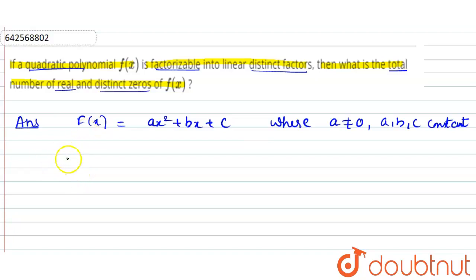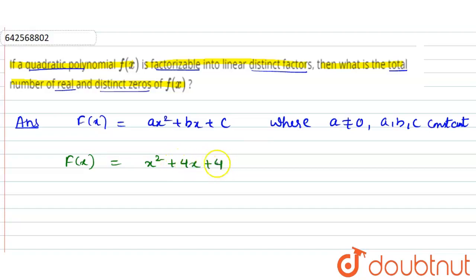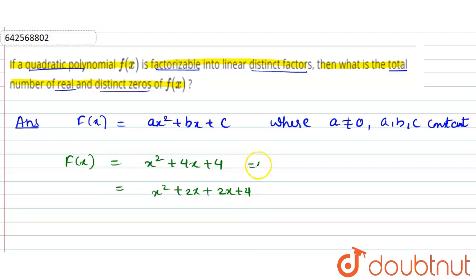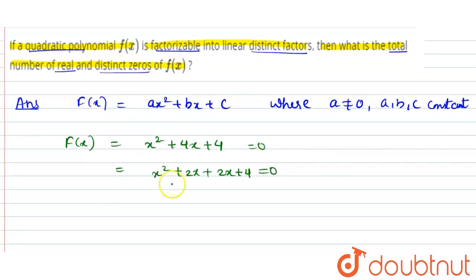We'll take f(x) as a quadratic polynomial which is factorizable. We take x² + 4x + 4. If we do the middle term splitting to find out the factors, we'll get x² + 2x + 2x + 4 = 0, because it is factorizable.